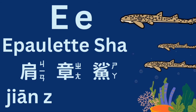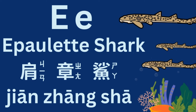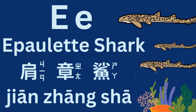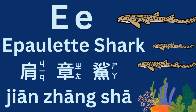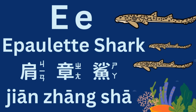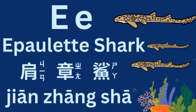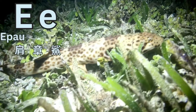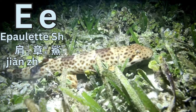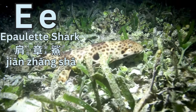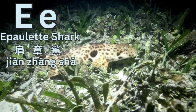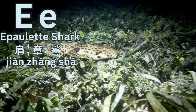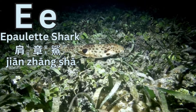E, epaulette shark. 肩章鯊 (Epaulette shark).